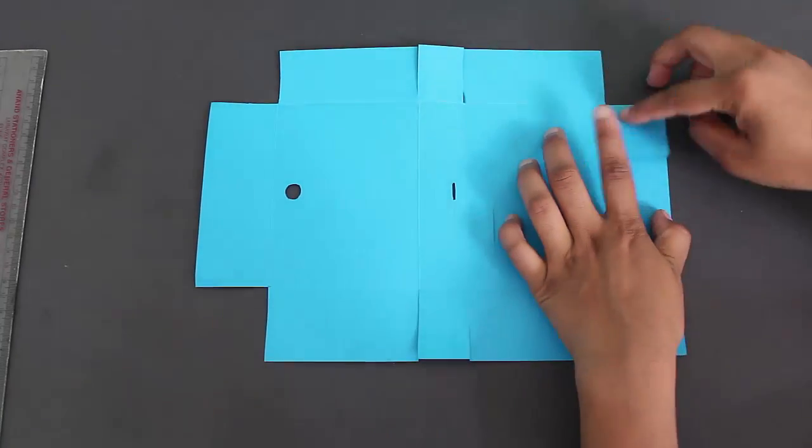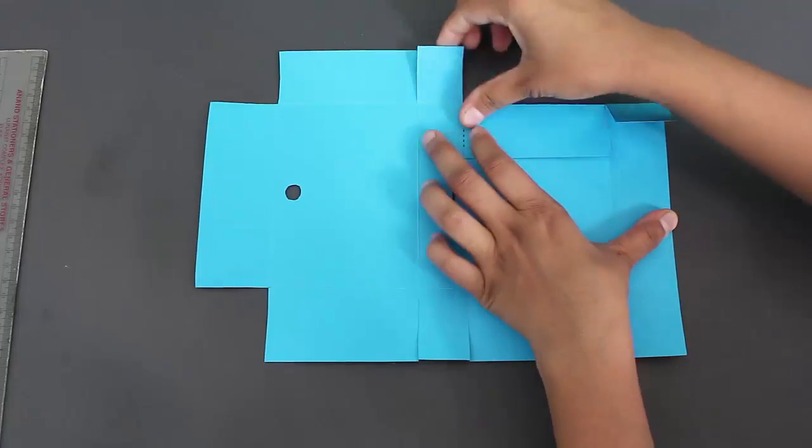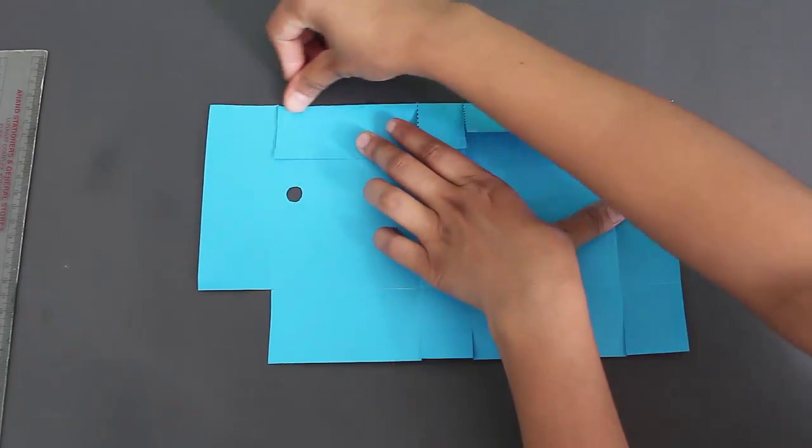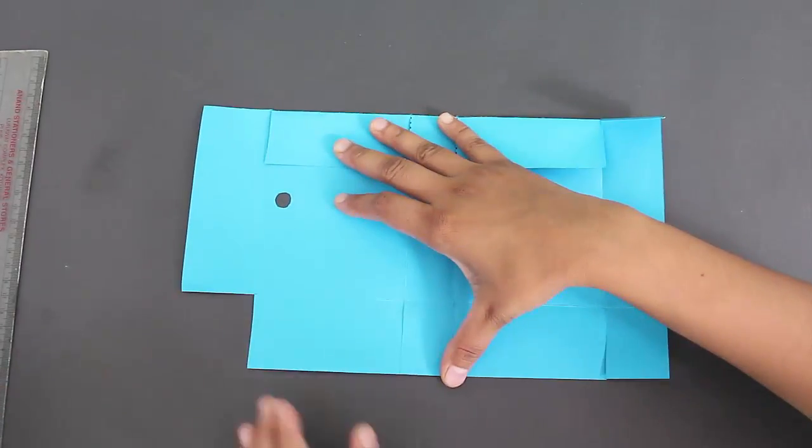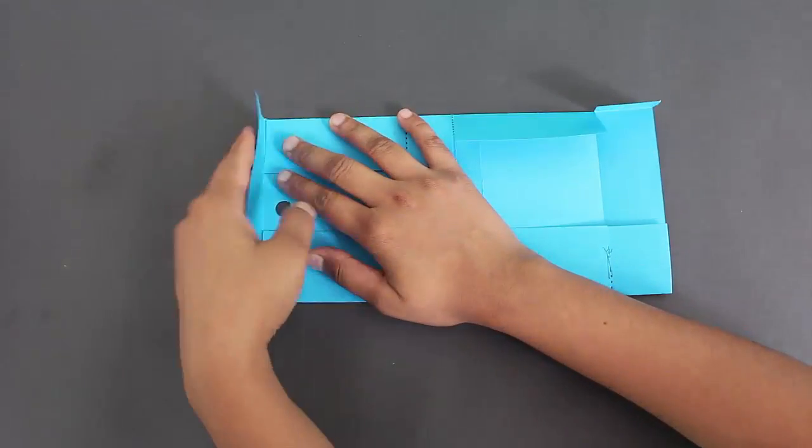Now gently crease all the lines and then fold the card sheet to make a small rectangular box. You can see that slowly the box is taking shape.